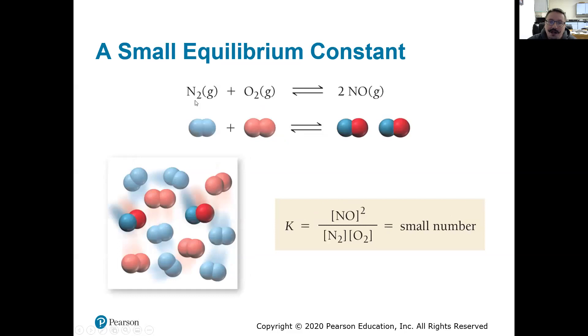If we had a small equilibrium constant, N2 gas plus O2 gas makes two NOs, we go over here, we look at equilibrium, how many of those product molecules do we have? Only two. We have six of the N2 reactant molecules and four of the O2, so same way. We could tell right away from the picture, more reactants than products. We could plug the values in. Two squared is four over six times four, which is 24. Four over 24 is 0.16 or something like that, so we have a number that's noticeably smaller than one. So again, reactants favored over products, which is what we're seeing in that picture.